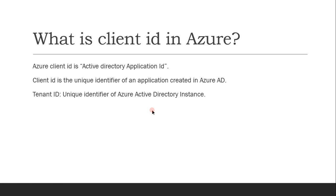There is one more ID called the Tenant ID. The Tenant ID is the unique identifier of an Azure Active Directory instance. Don't be confused between Tenant ID and Client ID — Tenant ID is at the Active Directory level, a unique identifier of an Azure Active Directory instance, while Client ID is the unique identifier of an application created in Azure.